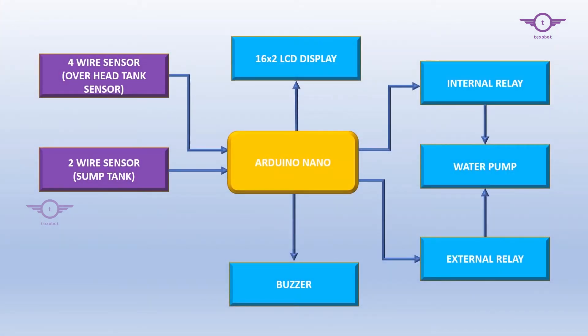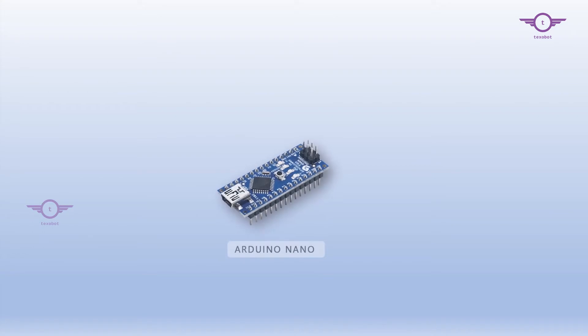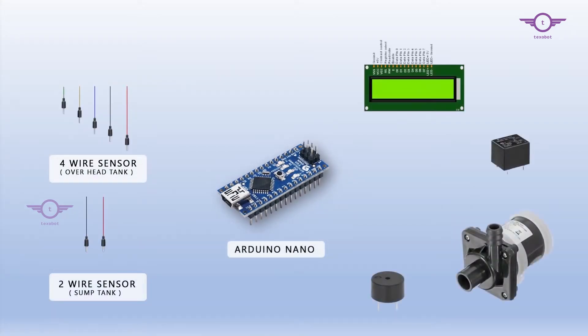Let's learn the designing and working of this project using the given block diagram. The first block is the Arduino Nano. Arduino is the brain of this project. It will take input from the sensors and control all other units according to the value received.